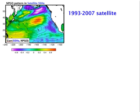This map is obtained by taking the NPGO index and correlating it point by point with the global satellite sea surface height data. Again, we find in this structure this dipole, which is associated with an intensification of the North Pacific Current. This map is obtained using data from 1993 to 2007.